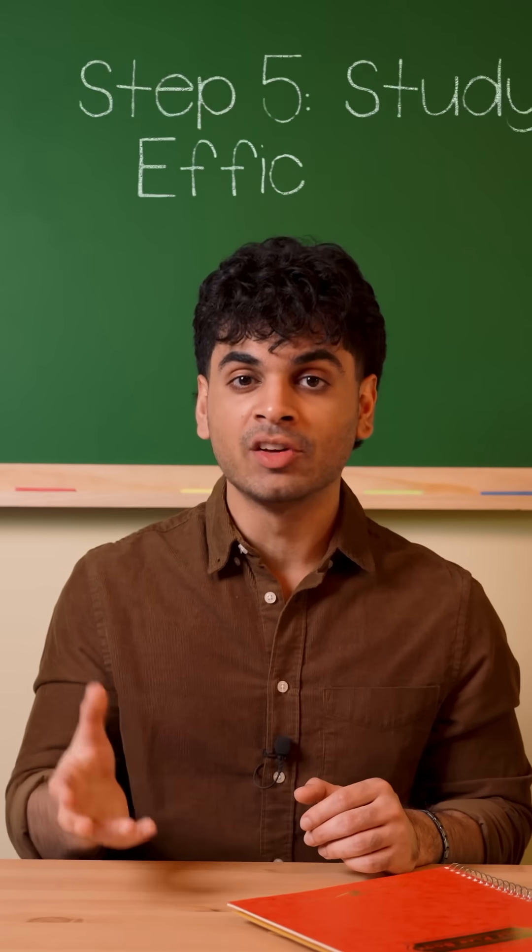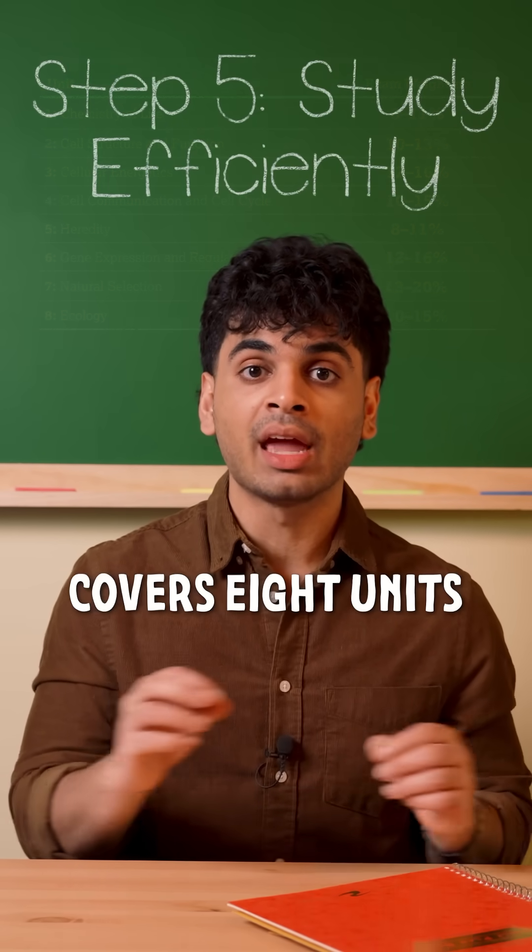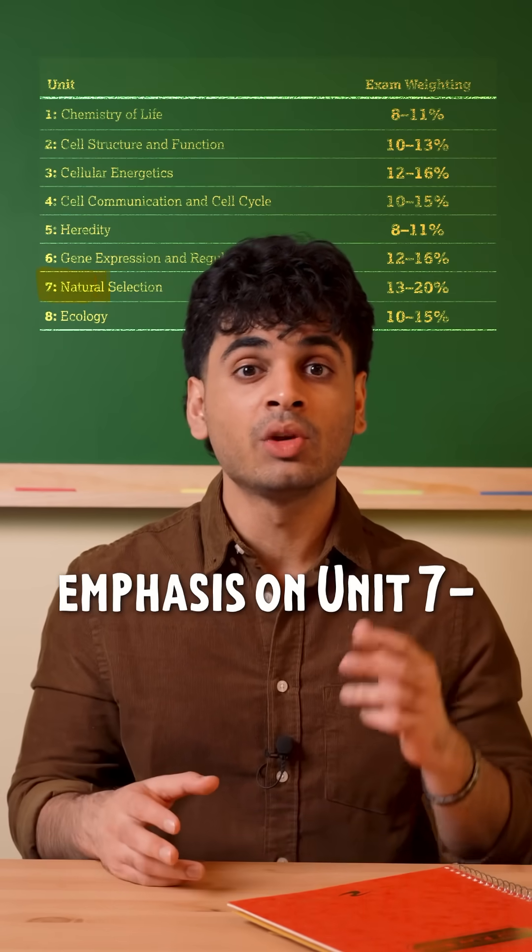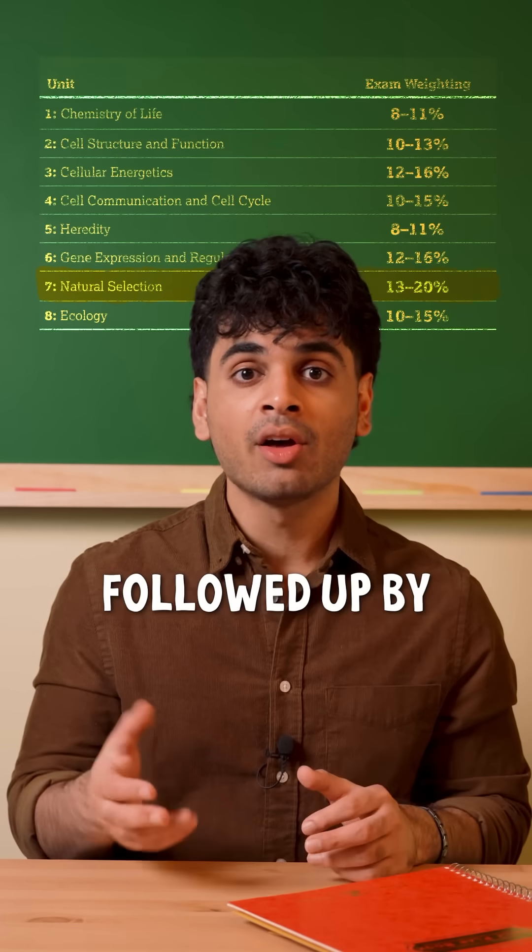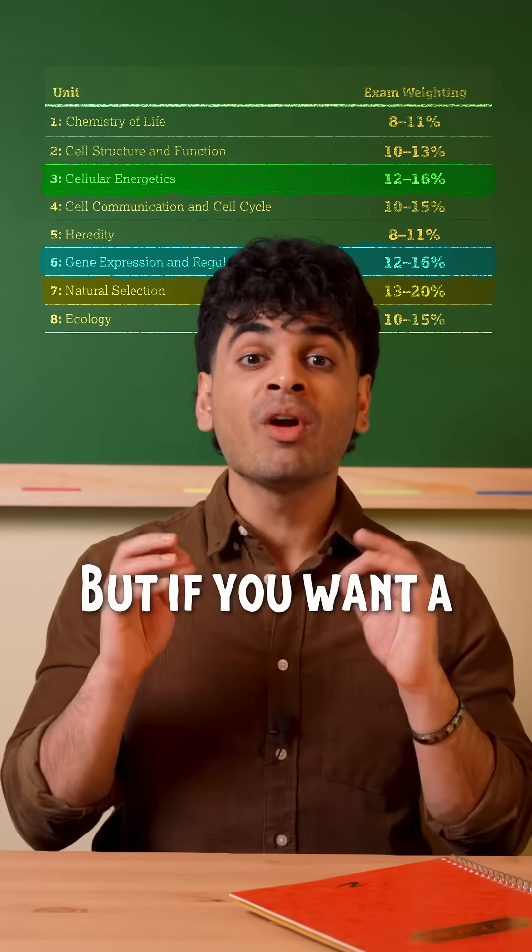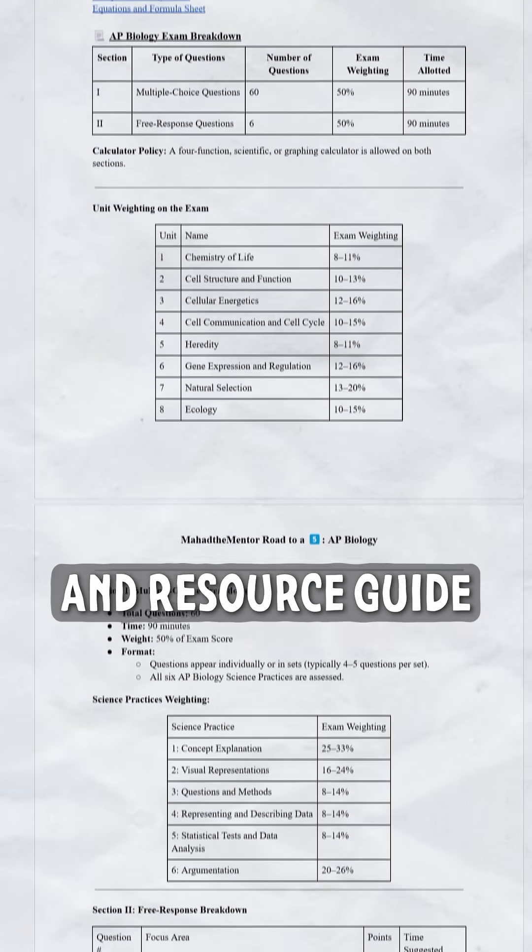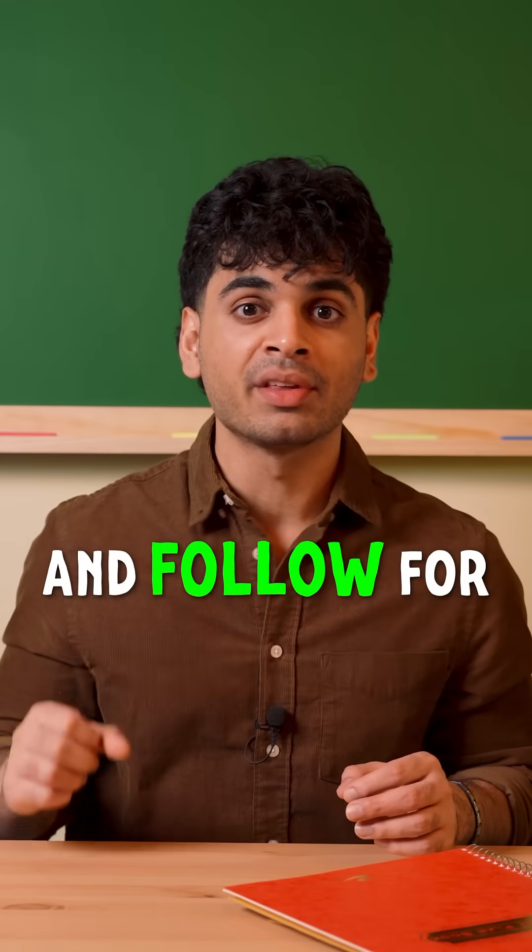Step five: study efficiently. The entire exam covers eight units, with the most emphasis on unit seven, natural selection, followed up by unit six and three. But if you want a full exam breakdown and resource guide, you can check out the link in my bio and follow for the next AP.